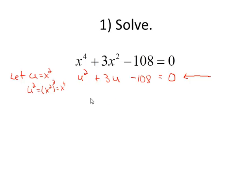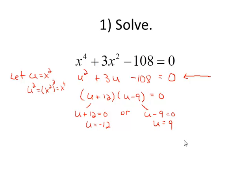This one happens to factor. I can factor this to be u plus 12 times u minus 9 equals zero. This will give me the solution of u equals negative 12. The second factor will give me the solution of u equals 9. But here's the problem. We're asked to solve this first equation for x, but my solutions are not for x, they're for u.